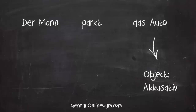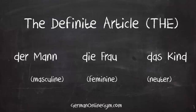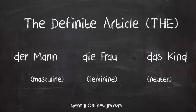But what does the accusative case actually do? The accusative case changes the masculine definite and indefinite articles. In a previous lesson we learned that there are three articles: der (masculine), die (feminine), and das (neuter).